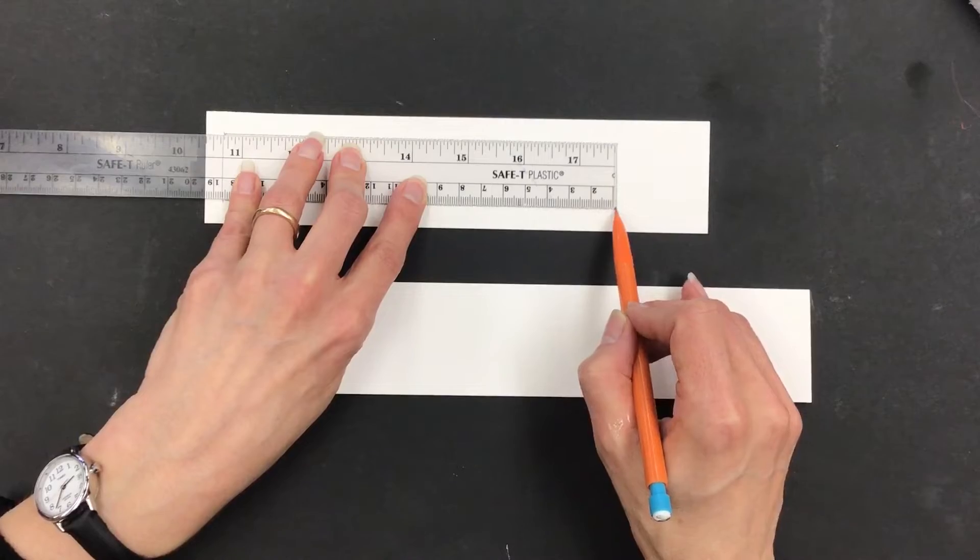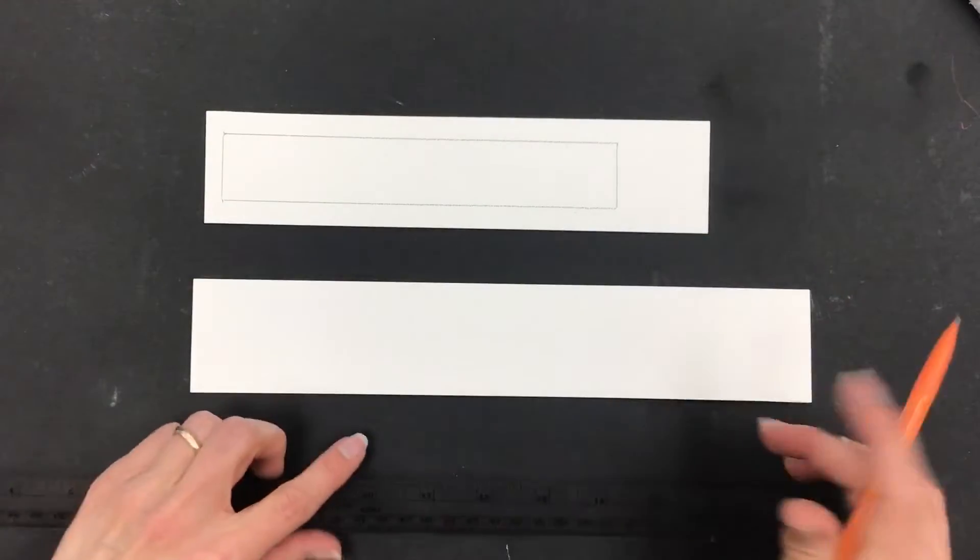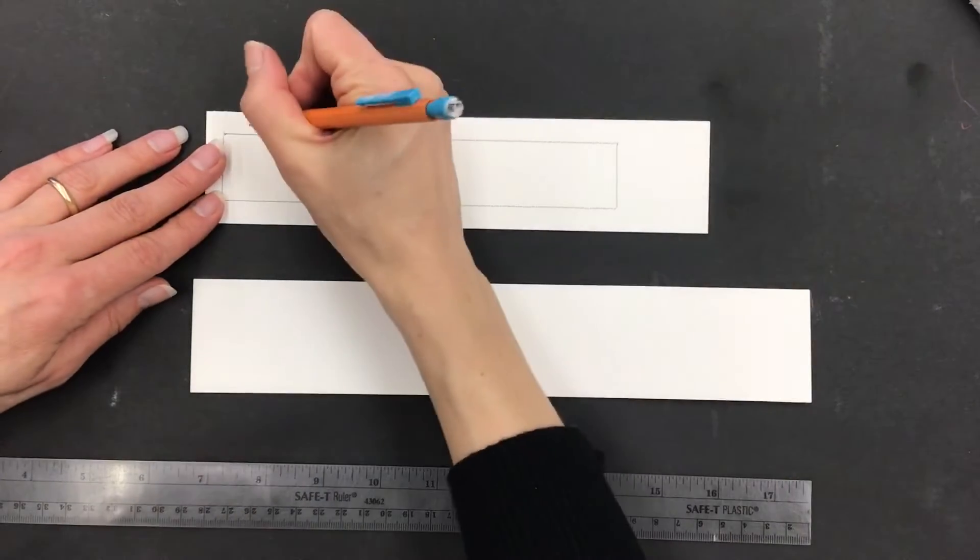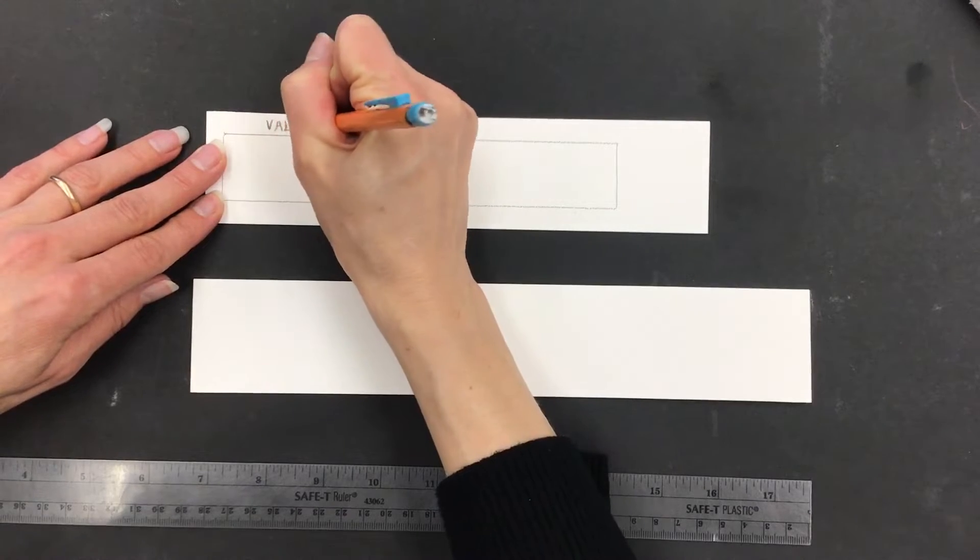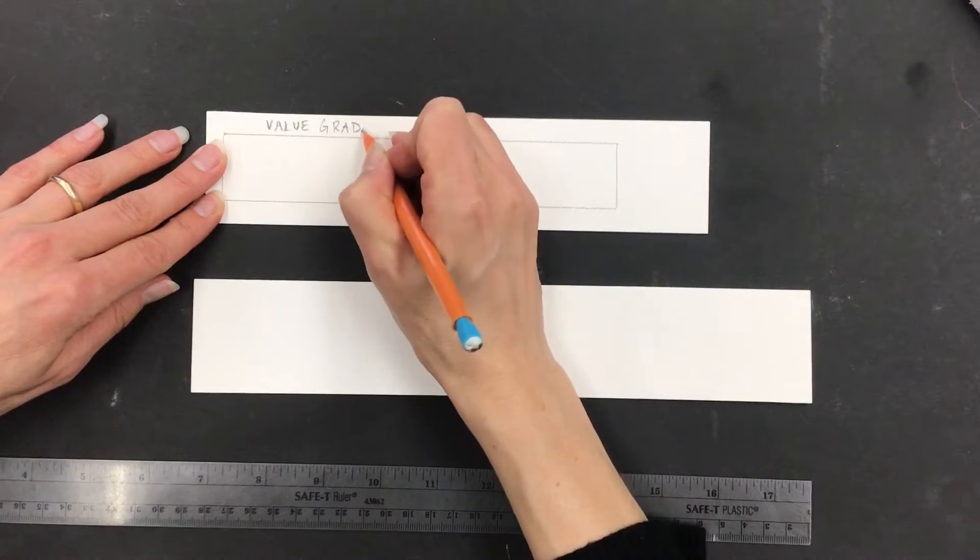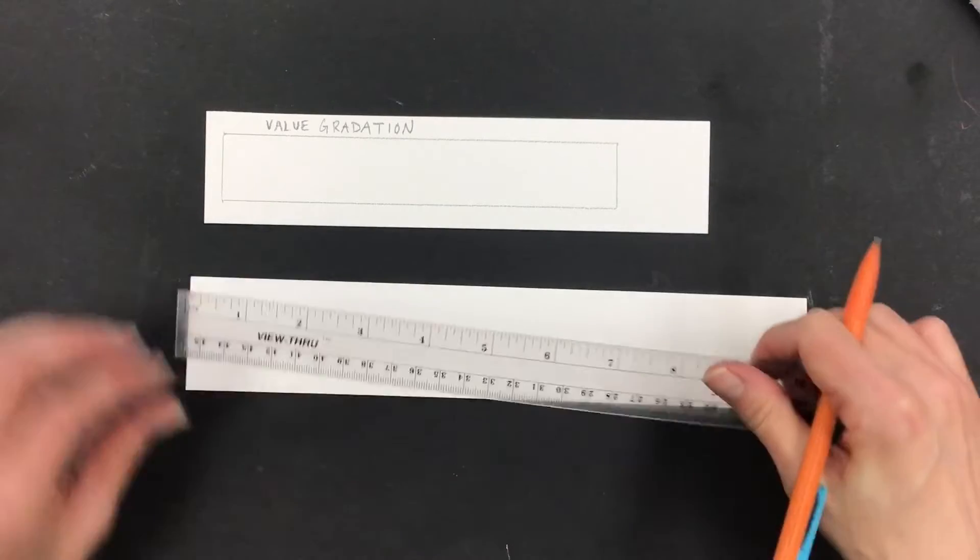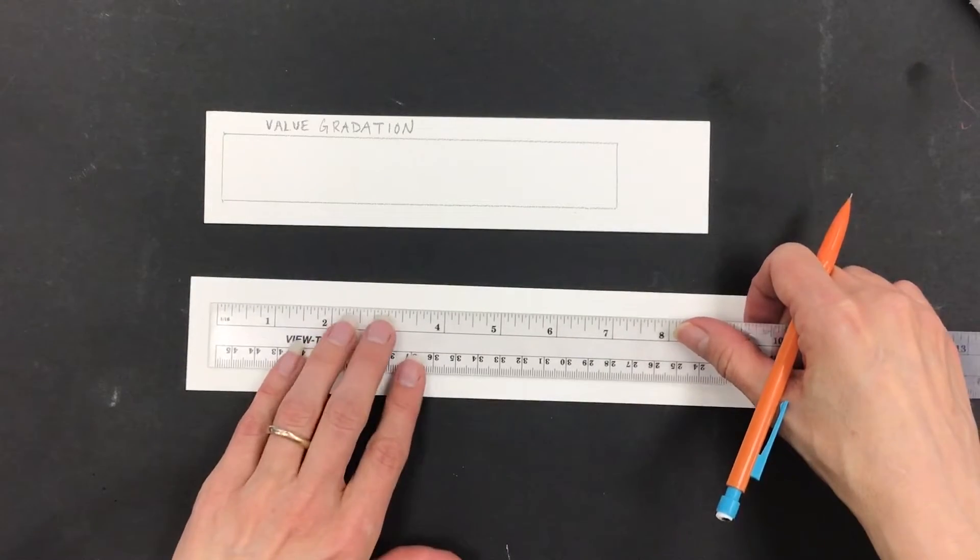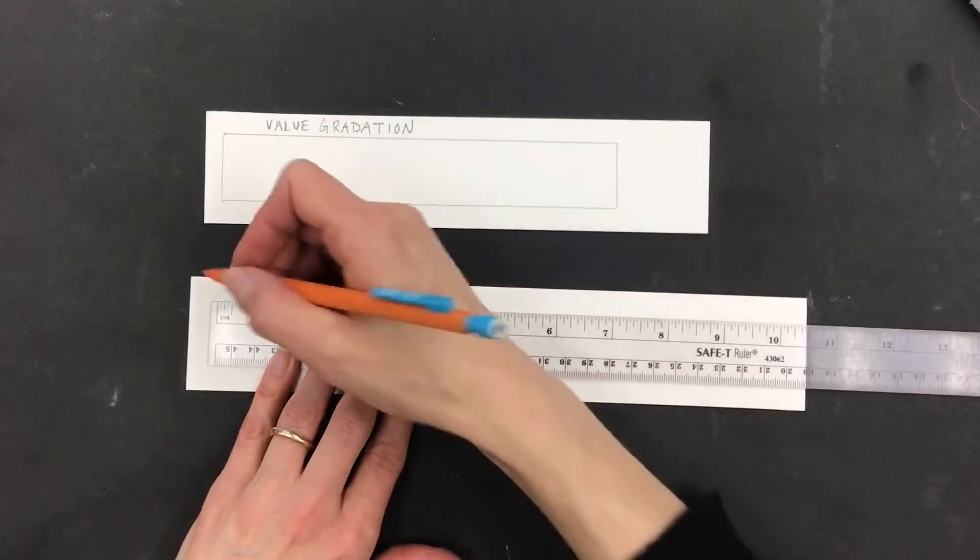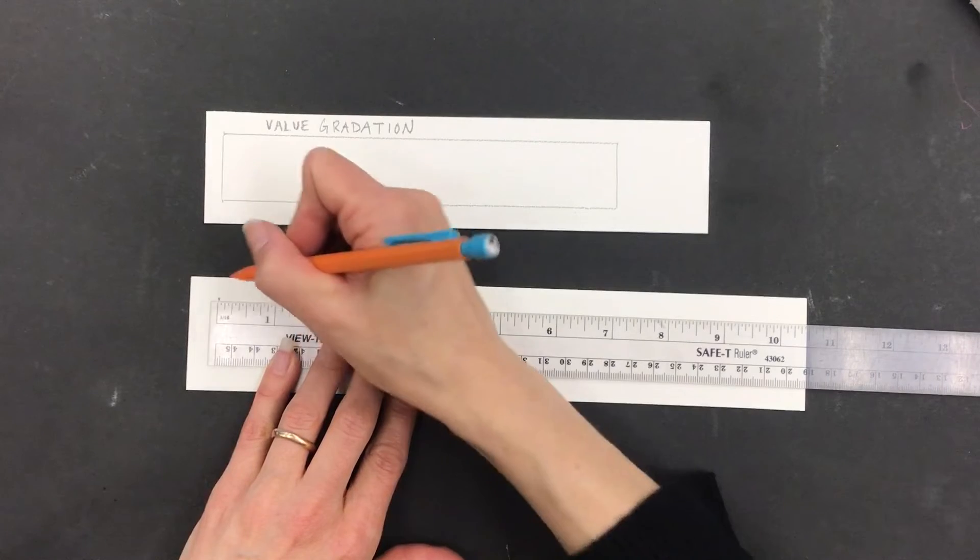Okay, this one is going to be my value gradation and this one's going to be my value scale. So the only difference in making this one is I'm going to make a little tally mark at zero, one, two, three, four, five, six, and seven.